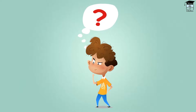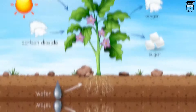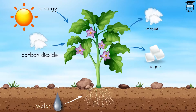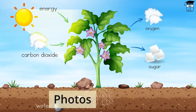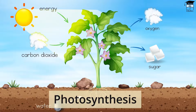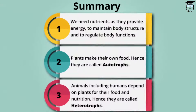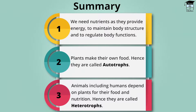This sounds interesting, right? You want to know how plants actually make their own food. Plants make their food by an amazing process called photosynthesis, which we will explore in our upcoming video.